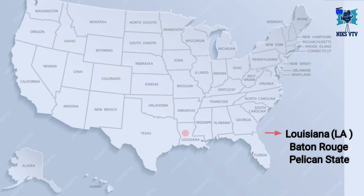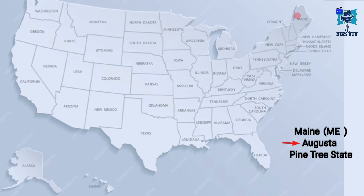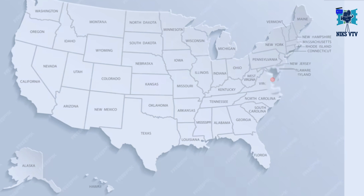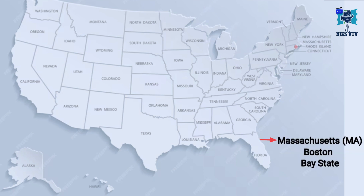Next state is Louisiana, its abbreviation is LA, capital is Baton Rouge, its time zone is CST, and its nickname is Pelican State. Next state is Maine, its capital is Augusta, time zone is CST, and its nickname is Pine Tree State. Next state is Maryland, its abbreviation is MD, its capital is Annapolis, its time zone is EST, and its nickname is Old Line State.